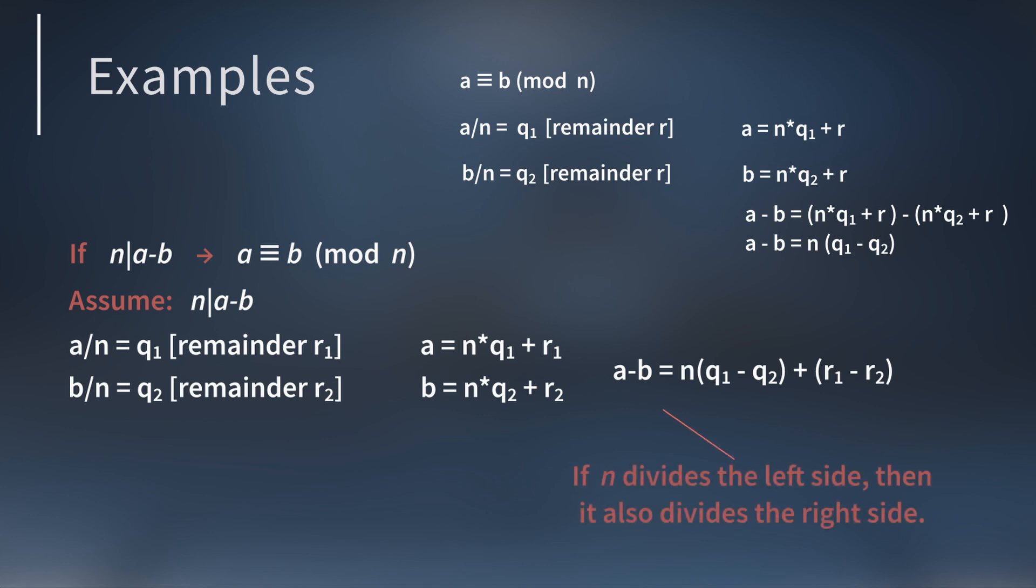If n divides a minus b on the left, then n divides the right-hand side too. n divides the first term since it's a multiple of n. This means that n has to divide r1 minus r2. But since the remainders are both between 0 and n minus 1, the only way n can divide this evenly is if their difference is 0. This means r1 equals r2.